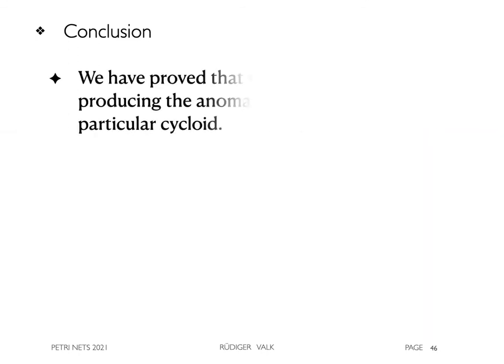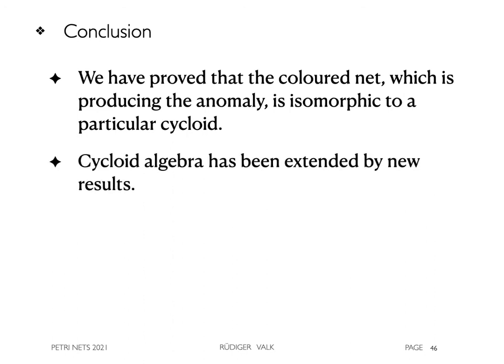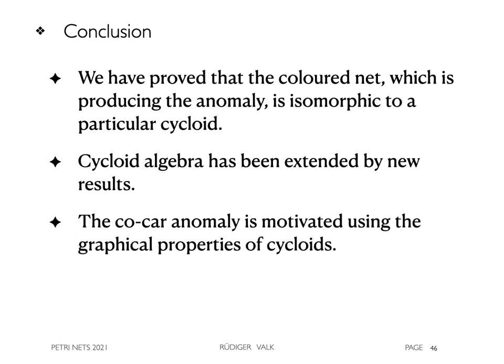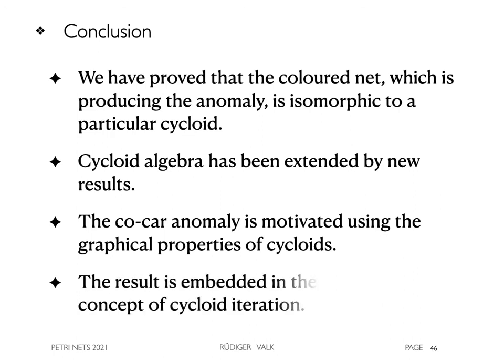Looking back, we have proved that the colored net, which is producing the anomaly, is isomorphic to a particular cycloid. Cycloid algebra has been extended by new results. The co-car anomaly is motivated using the graphical properties of cycloids. The result is embedded in the more general concept of cycloid iteration.